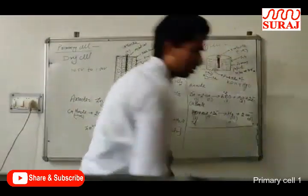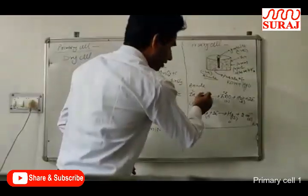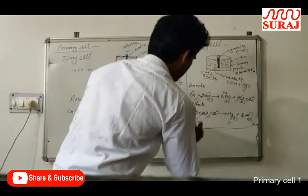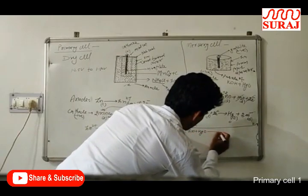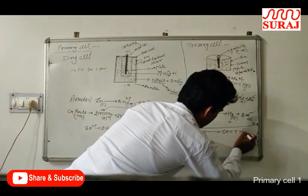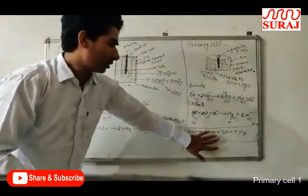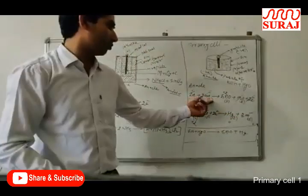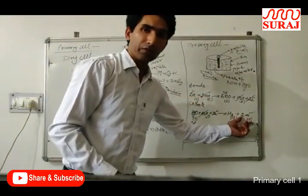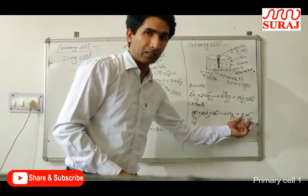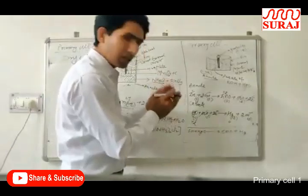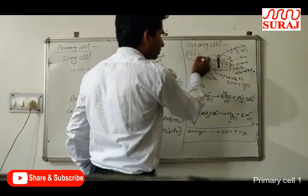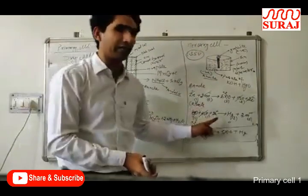When we add the anode and cathode reactions, the OH⁻ ions cancel out, the electrons cancel out, and H₂O cancels out. The overall reaction is: Zn + HgO → ZnO + Hg. There are no ions involved in the net reaction, so the concentration of OH⁻ ions remains constant. Because the concentration remains the same, this cell gives a constant voltage of 1.35 volts.